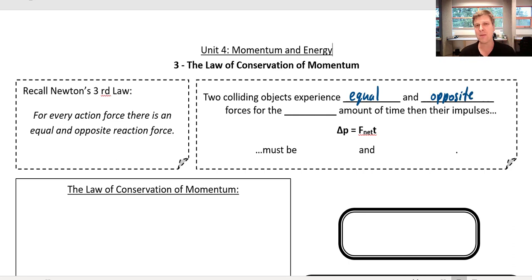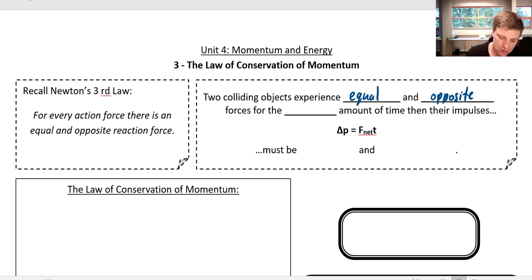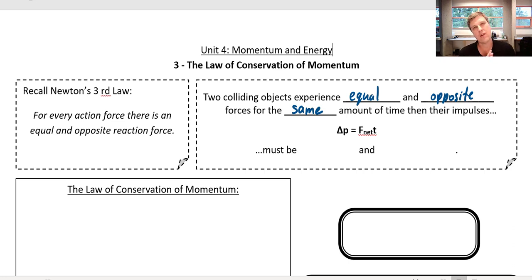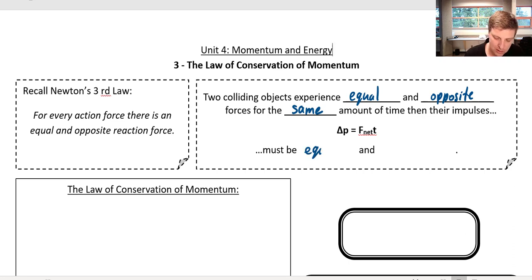But if you think about it, they must experience those forces for the same amount of time. The ball is hitting the bat for the exact same amount of time that the bat is hitting the ball — the time they're in contact. So they impact each other for the same amount of time, and since impulse equals net force times time, their impulses must be equal and opposite.